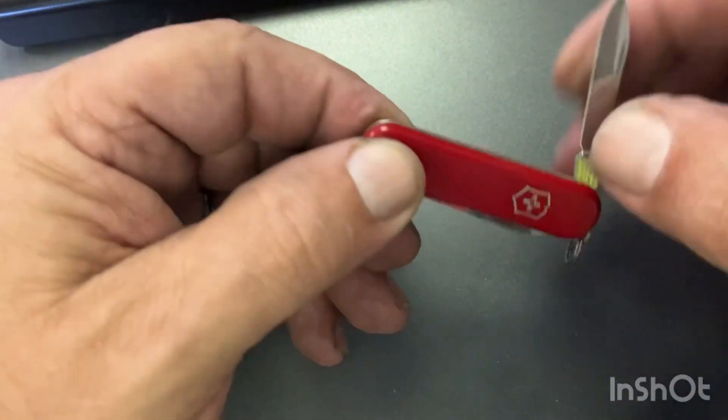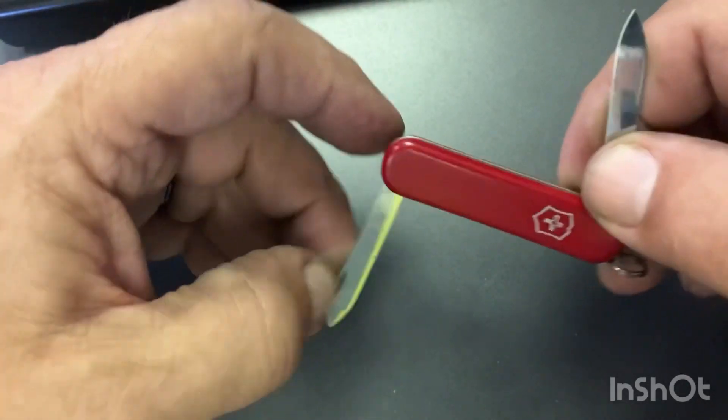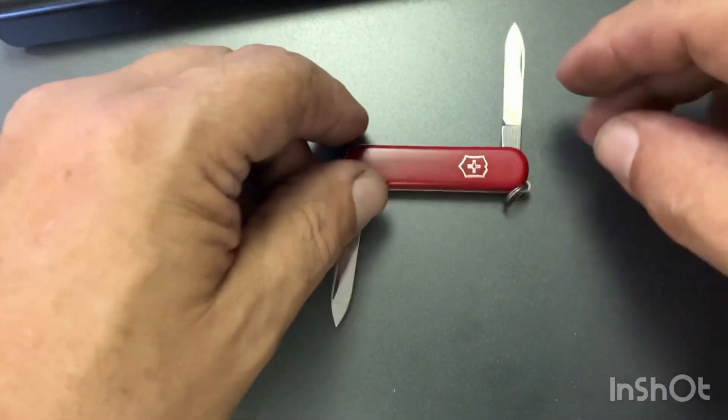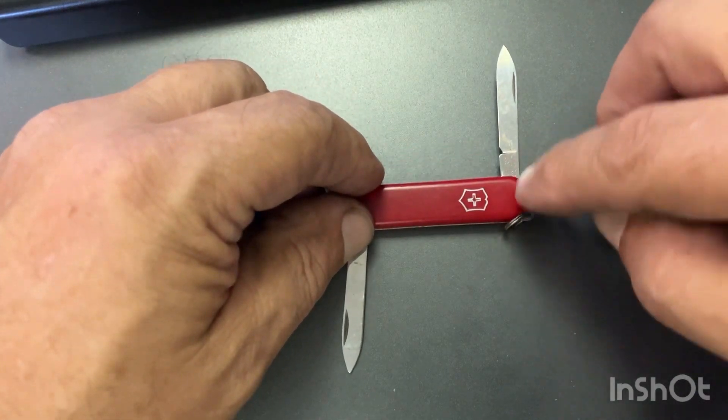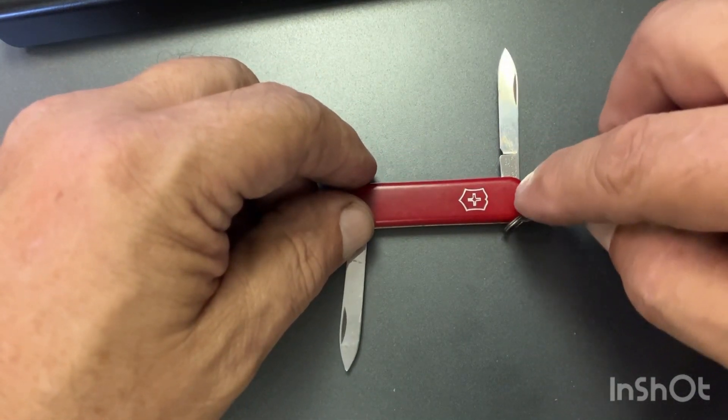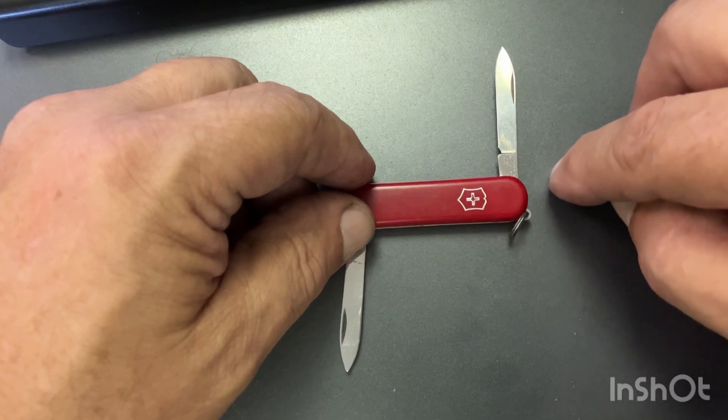But once again, this is the Victorinox Escort. Still available on the website with the toothpick and tweezers and the scale tools. This one does not have them, which didn't come that way.